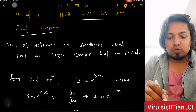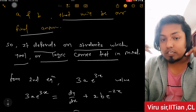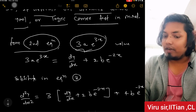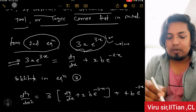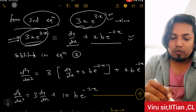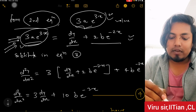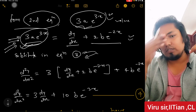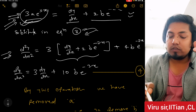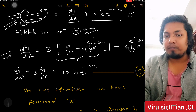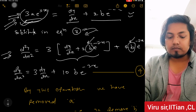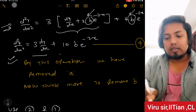From equation 2, I am finding the value of Ae^(3x): rearranging, Ae^(3x) = dy/dx + 2Be^(-2x) divided by 3. Now I substitute this value into equation 3. After substitution, B is still present. Other methods can also be used to remove A and B — it depends on what logic comes to your mind. From this we get d²y/dx² in terms of 3dy/dx and terms with B.